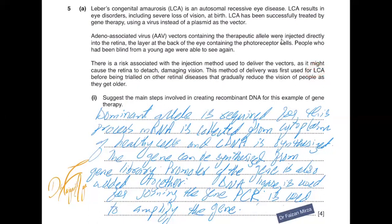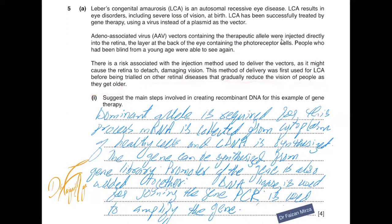This was first tried on LCA patients because they were already blind. In other retinal diseases, people are not blind to begin with — they have vision and gradually lose it as they grow older. So the injection method was first trialed on LCA patients rather than on people who were gradually losing their vision with age.